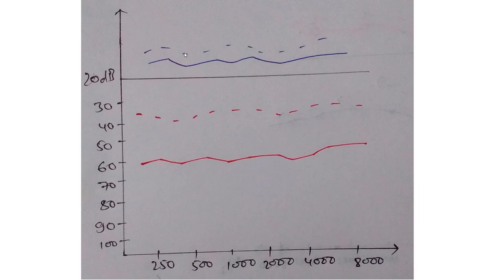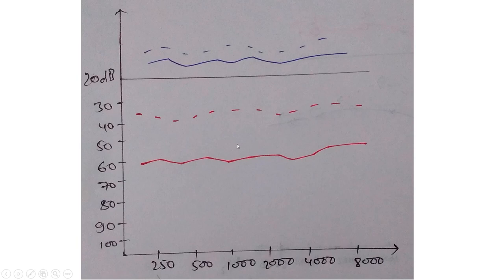In this audiogram, the left ear is normal above 20 decibels. In the right ear, both the continuous line (air conduction) and the dotted line (bone conduction) are decreased — indicating sensorineural hearing loss. However, the air-bone gap appears to be more than 15 decibels (air conduction around 60 dB, bone conduction around 40 dB), meaning there is both sensorineural and conductive hearing loss. This is a mixed hearing loss in the right ear, while the left ear is normal.